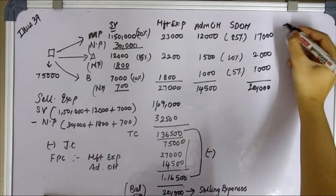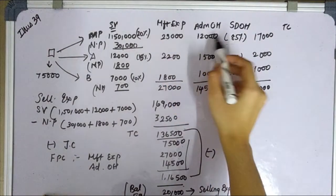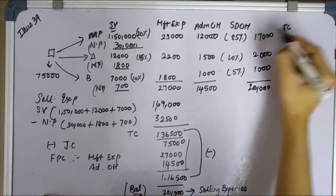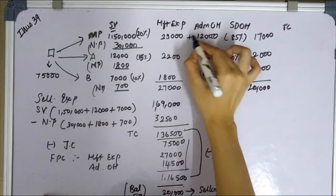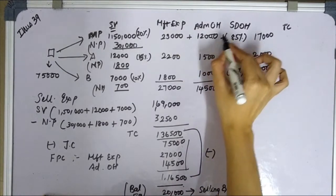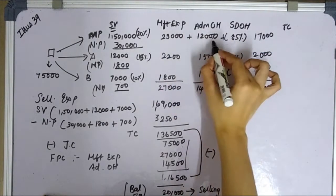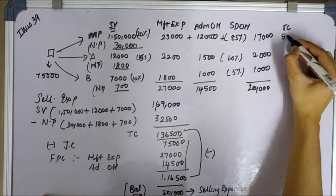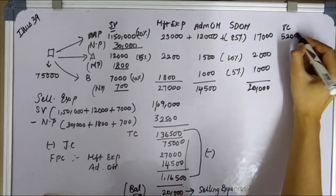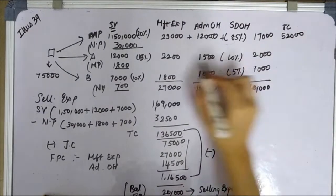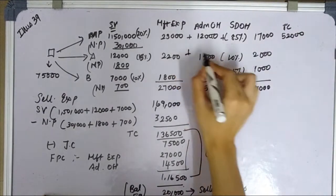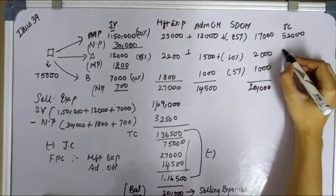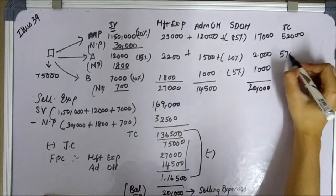Next, the total cost is computed by adding three cost components. For the main product: 3,000 plus 12,000 plus 17,000 gives us 52,000. For by-product A, total cost is 5,700.